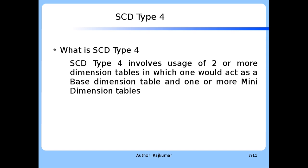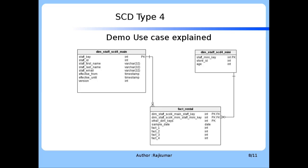The demo use case: The use case considered for the SCD Type 4 demo is on Staff Dimension. These are the tables involved and their structure, where Dimension_Staff_SCD_Type4_Main is the Base Dimension table, and Dimension_Staff_SCD_Type4_Mini is the Mini Dimension table. You can see that the Fact table has a reference to the primary keys from both these Dimension tables.